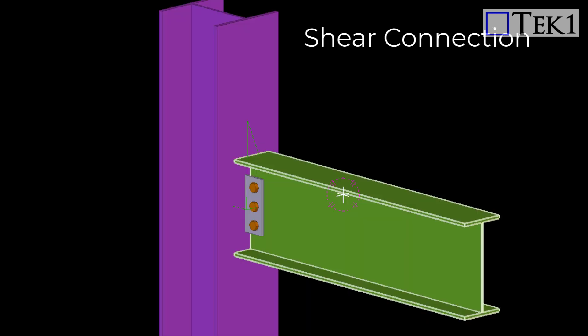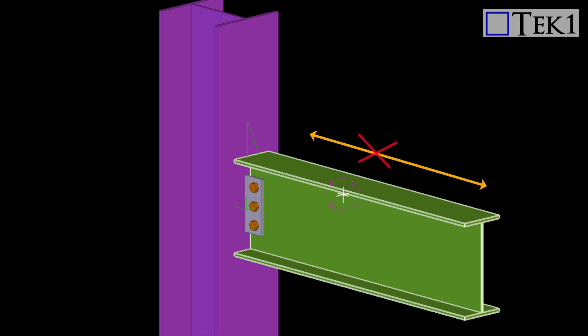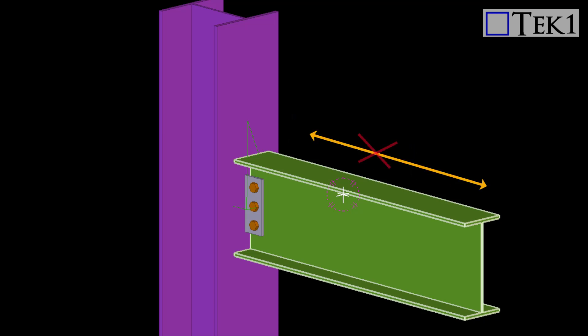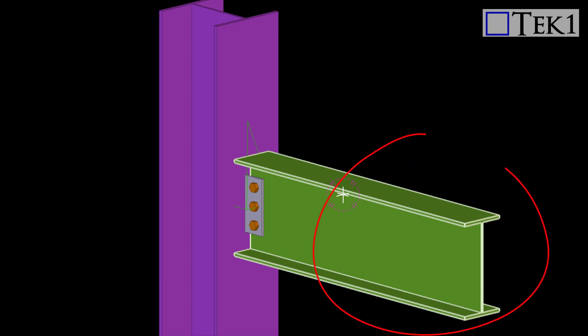A shear connection is a joint that allows the transfer of shear forces between two members. It prevents the member from oscillating. In this connection, when an external load is supplied, the beam will not oscillate but can rotate.